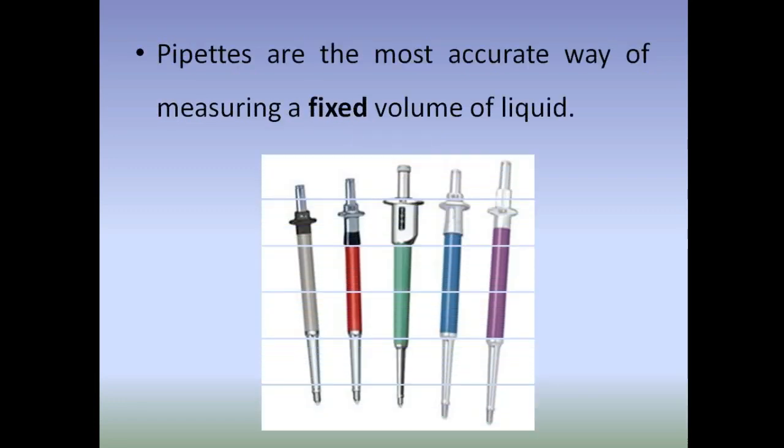For approximate volumes, measuring cylinders can be used. For example, solvents can be measured using measuring cylinders. Pipettes are the most accurate way of measuring a volume of liquid. For example, if a chemical reaction requires exactly 20 ml of a reagent to be added, in those cases we can use pipettes to measure.